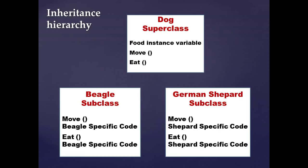Why do we use inheritance? Because we've determined that some of our classes have certain behaviors, characteristics, and attributes in common. For instance, if we look at this dog superclass, we determine that beagles and German shepherds both have a common behavior — they both move and they both eat. So we can connect these classes together in a relationship called inheritance.